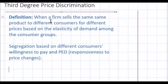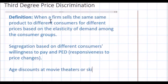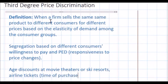Some simple examples include age discounts at movie theaters or ski resorts. Airline tickets are another example based on the time of purchase. People who buy tickets very early are more likely to be vacation travelers, while people who buy plane tickets at the last minute tend to be business travelers. Therefore, if you buy tickets early you might end up paying a lower price since you're going to be more responsive to price changes.